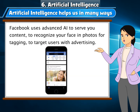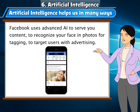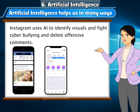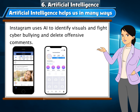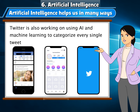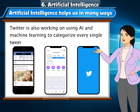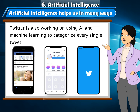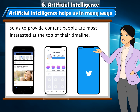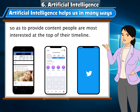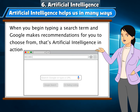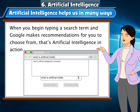Social Media: Facebook uses advanced AI to serve you content, to recognize your face in photos for tagging, and to target users with advertising. Instagram uses AI to identify visuals and fight cyberbullying by deleting offensive comments. Twitter is also working on using AI and machine learning to categorize every single tweet so as to provide the content people are most interested in at the top of their timeline.